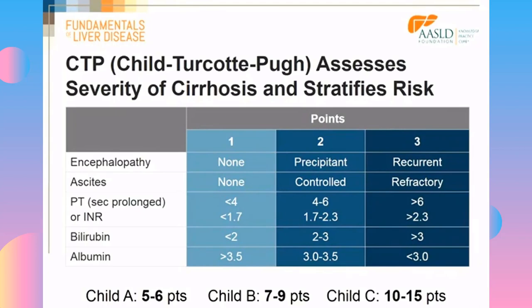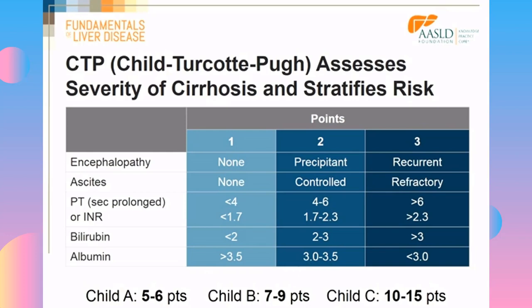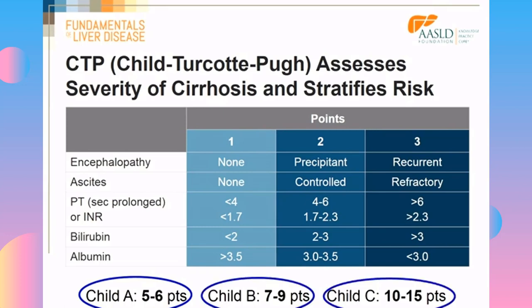The best way to assess the severity of cirrhosis is the Child-Turcotte-Pugh score, also called the Child score. It's based on two clinical parameters — encephalopathy and ascites — and three laboratory parameters: INR, bilirubin, and albumin. You assign one, two, or three points depending on severity, for a range of 5 to 15. Patients are divided into Child A (5–6 points), Child B (7–9 points), and Child C (10–15 points). Child A patients are mostly compensated, Child B are mostly decompensated, and Child C are already further decompensated.